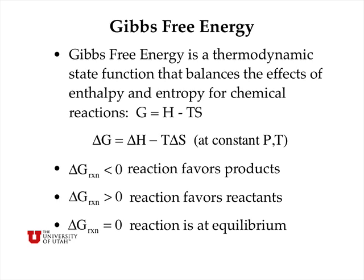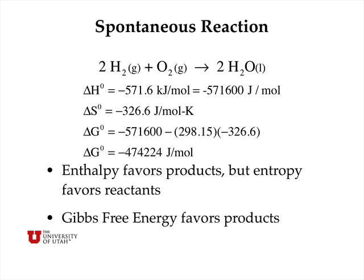If delta G for a reaction is less than zero, then that reaction favors the spontaneous formation of products. If delta G is greater than zero, then the reaction favors the spontaneous formation of reactants — the opposite direction. And if delta G equals zero, then the reaction is at equilibrium and doesn't favor the spontaneous formation of either products or reactants.